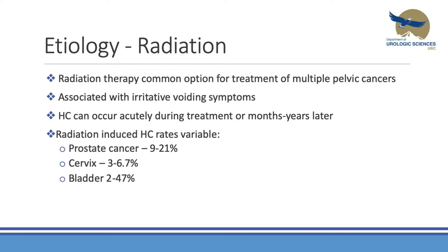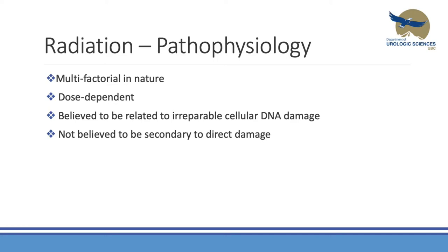Radiation-induced hemorrhagic cystitis is generally the most challenging. Radiation therapy is a common option for many pelvic cancers — not just urologic but also cervical and rectal cancers. Patients present with irritative voiding symptoms: urgency, frequency, and dysuria. It can happen at any time after treatment, whether acutely or months to years later. Depending on which data series you look at, it could affect as low as 2% to as high as 47% of patients, and it is truly multifactorial and dose-dependent in nature.